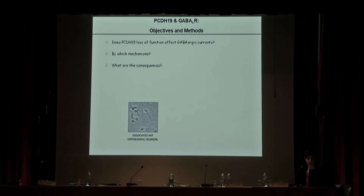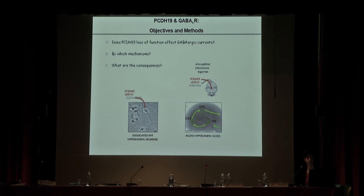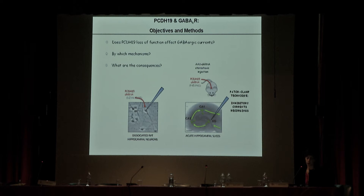We are using two main experimental models. The first is cultured hippocampal neurons, in which we transfect a specific shRNA to down-regulate protocadherin-19 expression. The second model is more complex but more physiological: acute hippocampal slices taken from mice injected with the same protocadherin-19 shRNA. We use the patch clamp technique to assess inhibitory currents.